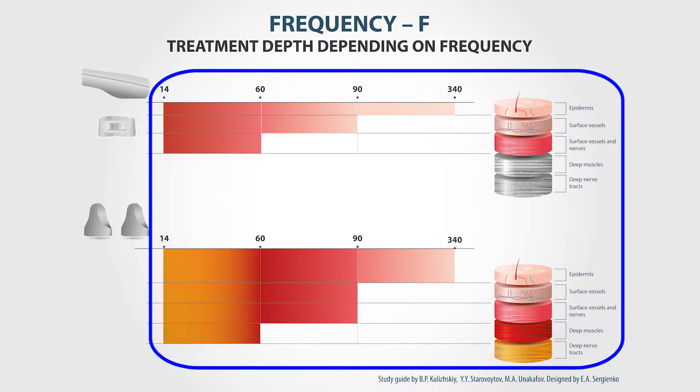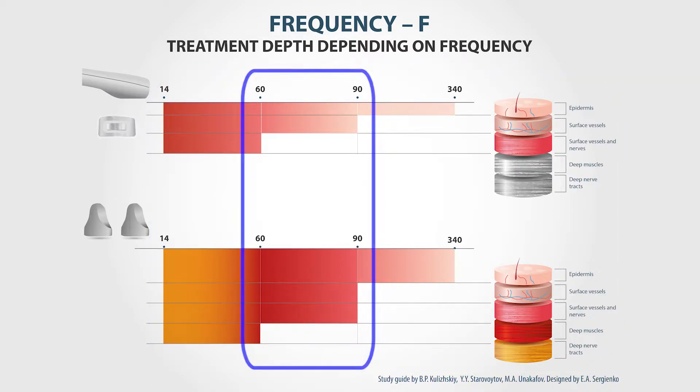To make the right choice depending on our target, we simply need to match the desired body structure with the right frequency value. The frequencies of 60 and 90 Hertz are the universal values.